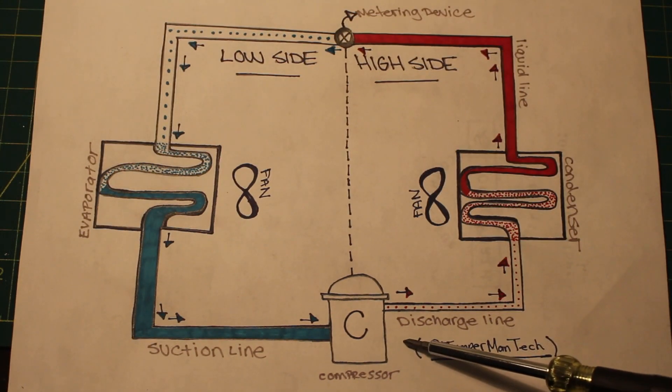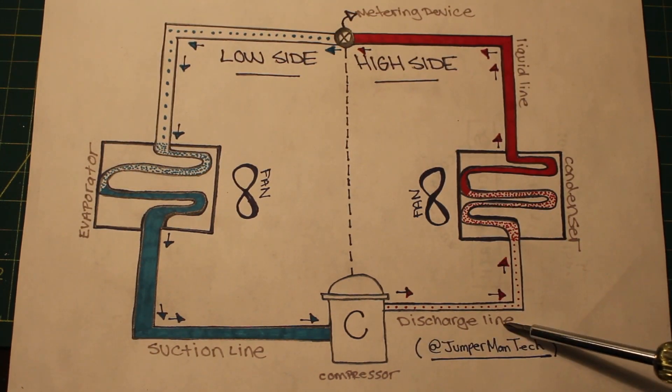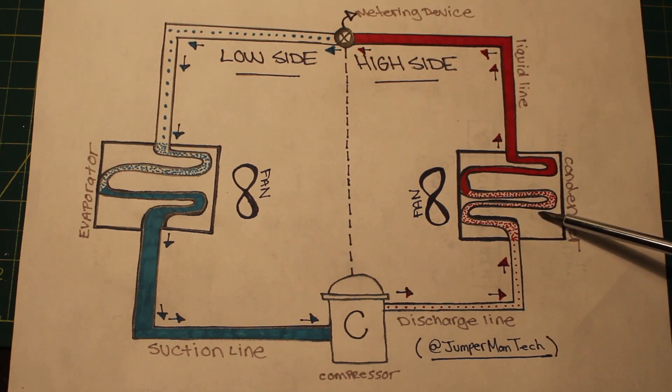Refrigerant leaves our compressor, travels through our discharge line, and enters our condenser. Heat is being rejected in our condenser. A basic condenser is just a copper coil with aluminum fins surrounding for a greater heat transfer. This can be either cooled by air or water.